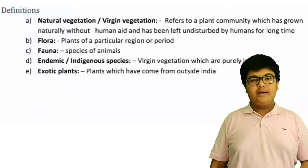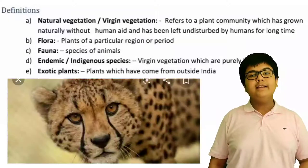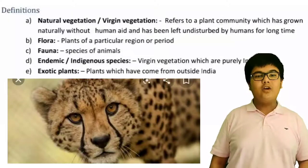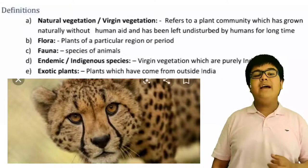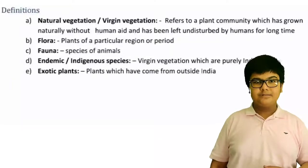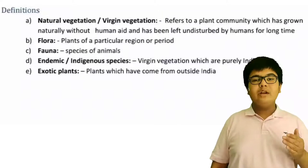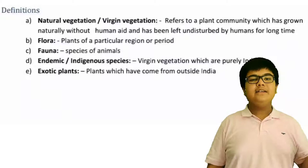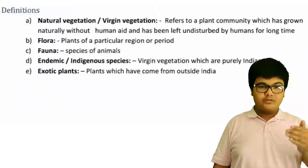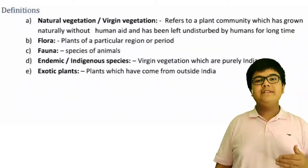Second, flora. These refer to the plants of a particular region. Third, fauna. These refer to the species of animals. Flora is similar to 'flower,' and flower is a plant — that's a way to remember which term refers to plants and which refers to animals.